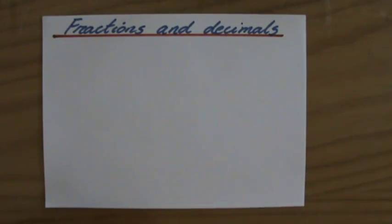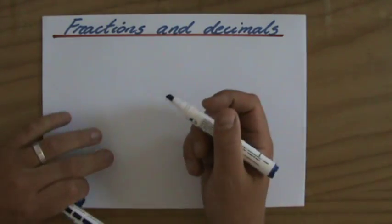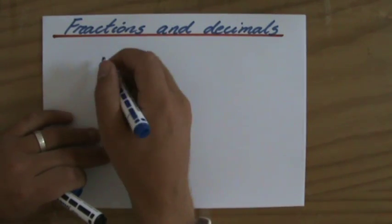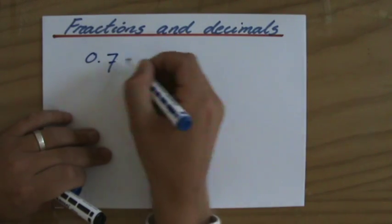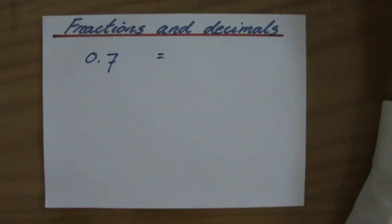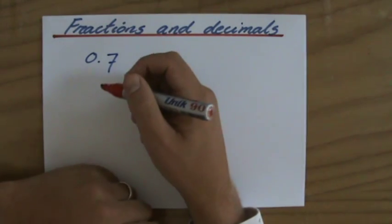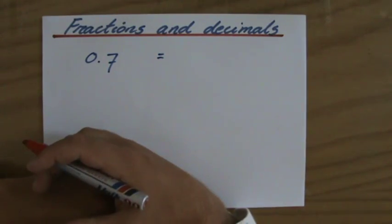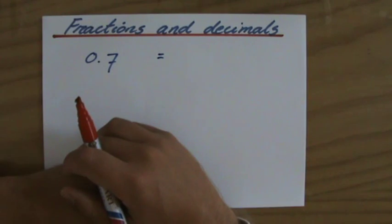Now let's have a look. If I have the decimal, for instance, 0.7, and I had to change that into a fraction, you need to be able to do so. What is important: you have to look at the place value.